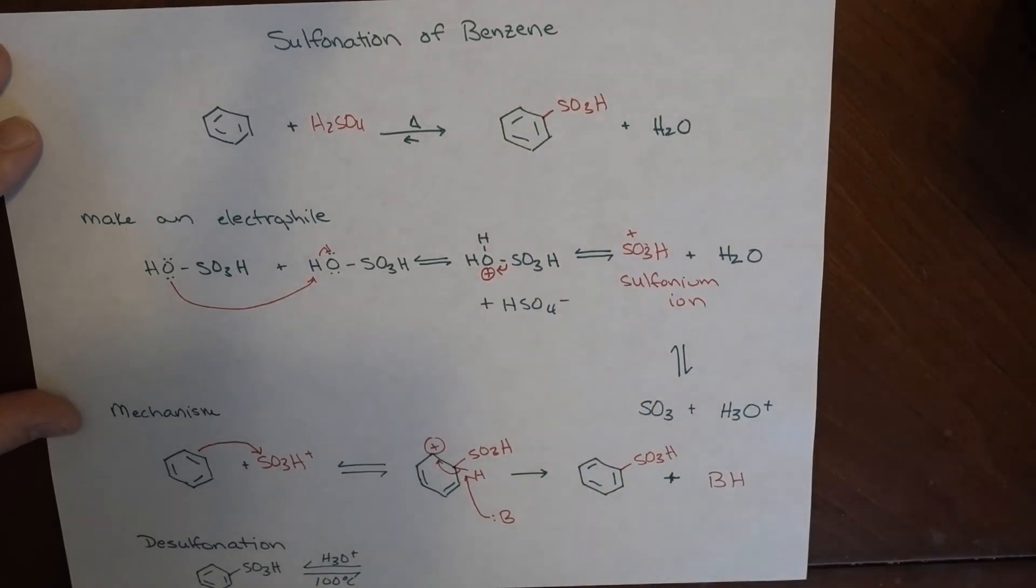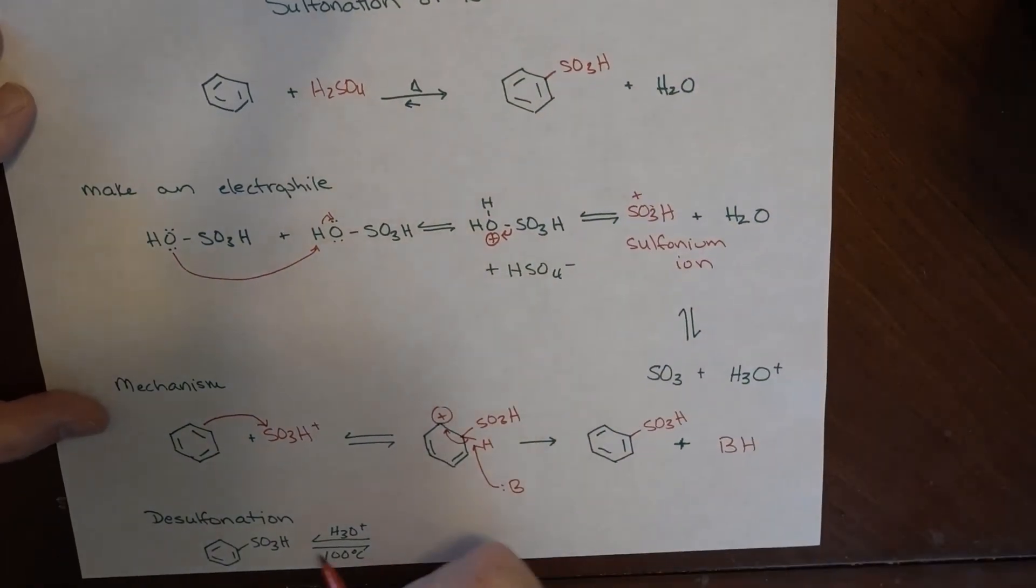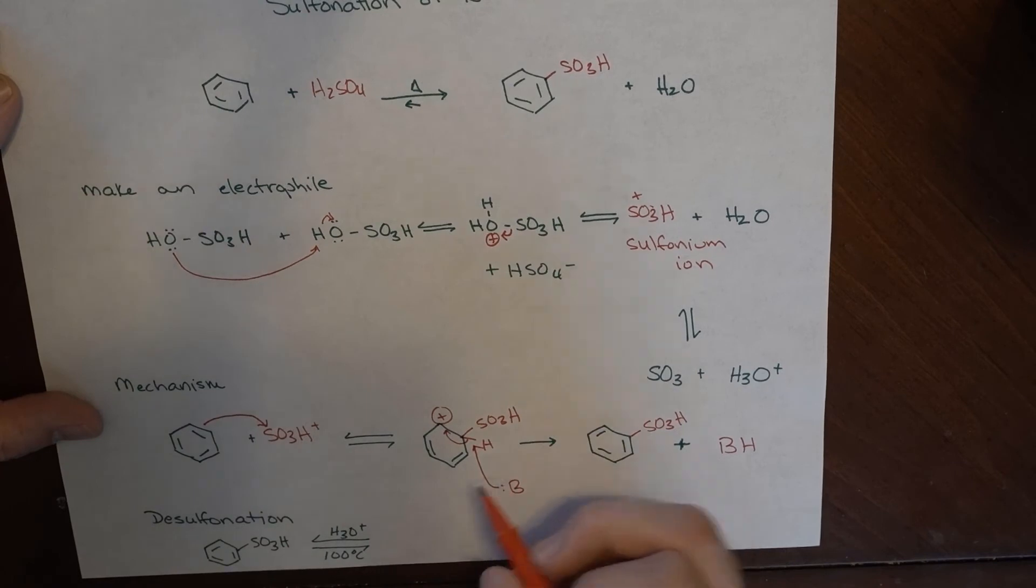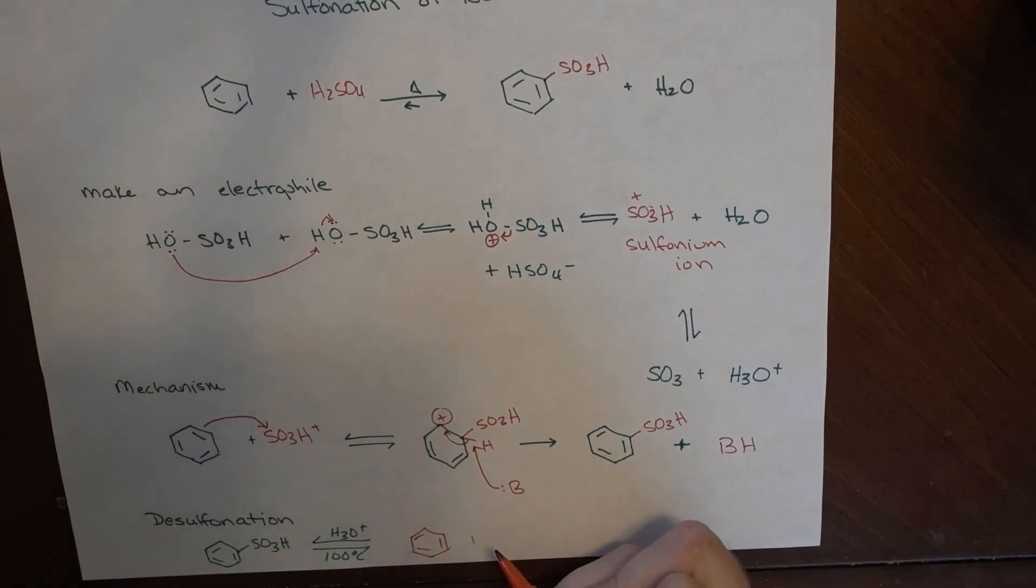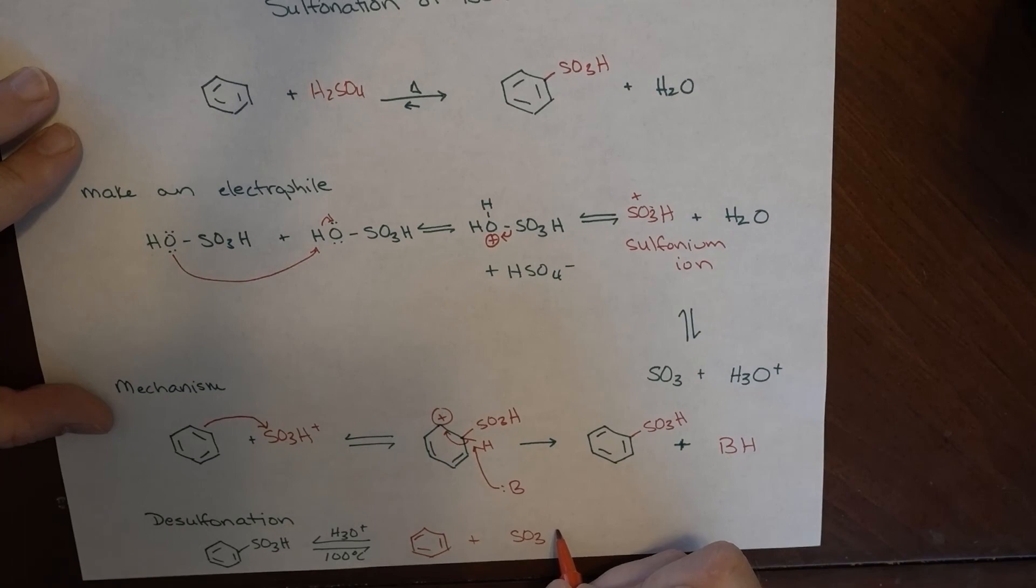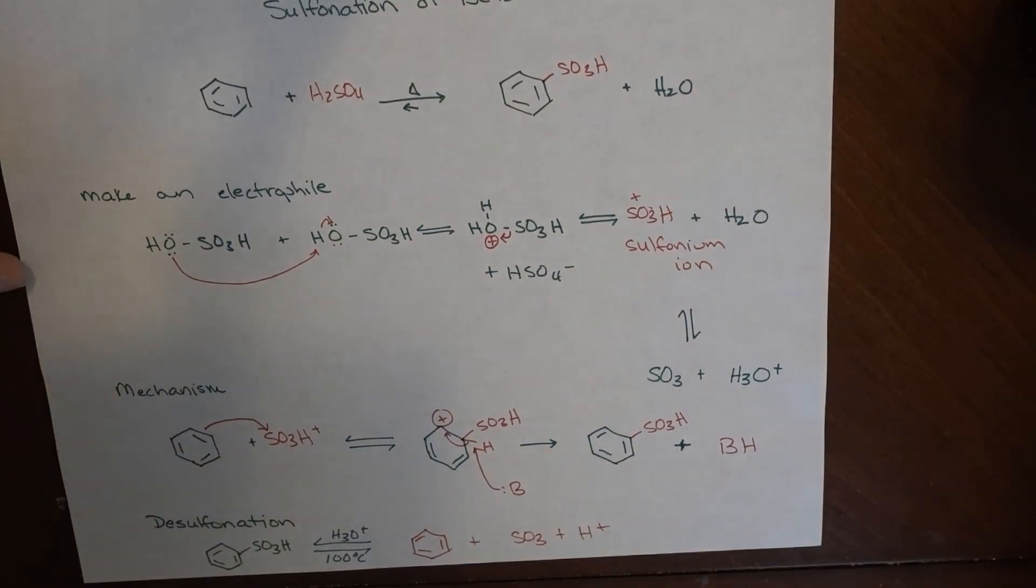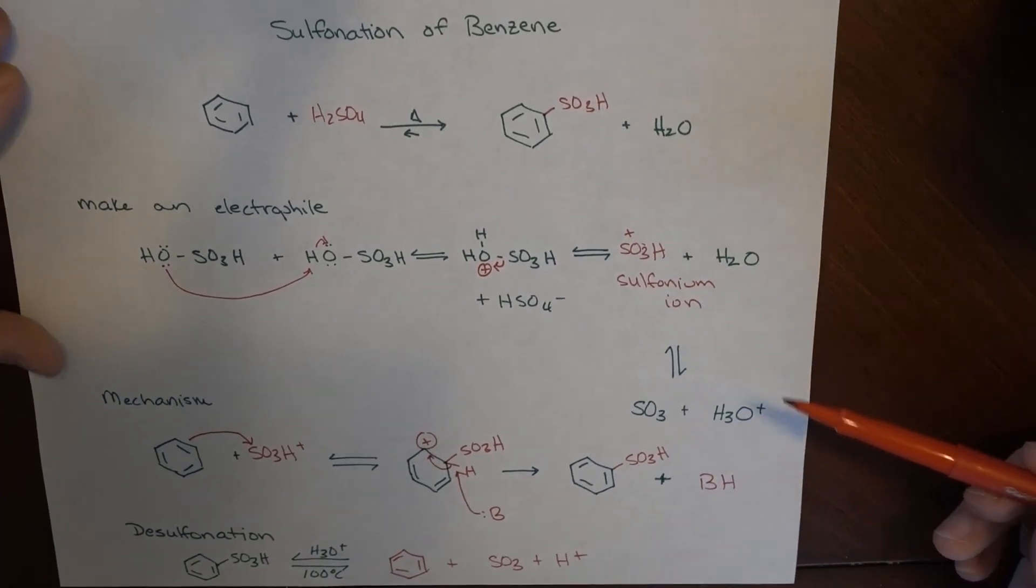That's a fairly straightforward reaction. The other thing we want to keep in mind is that we can actually reverse this and go back to what it was. We can desulfonate this by adding just a little bit of acid in the presence of heat, and what we end up with is benzene plus SO3 and H2SO4. The reaction is more or less reversible. Two major reactions: nitration and sulfonation. I hope that helps you.